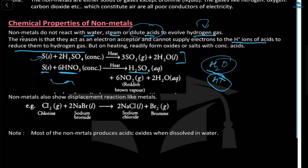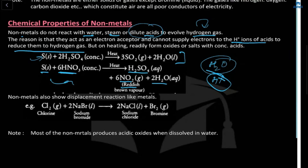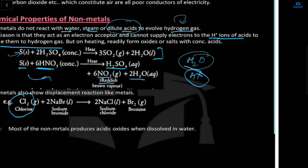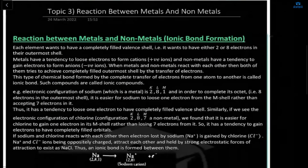Sulfur with HNO₃ can react but does not form H₂. Non-metals also show displacement reactions — for example, chlorine and sodium bromide: chlorine displaces bromine to form sodium chloride, and bromine is released alone.